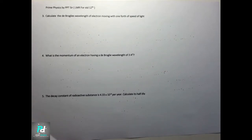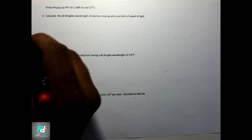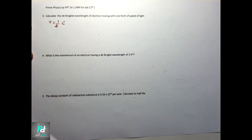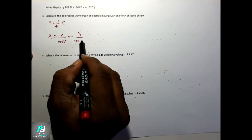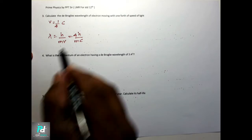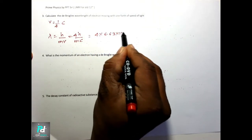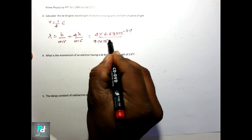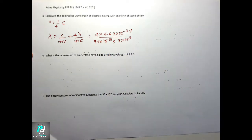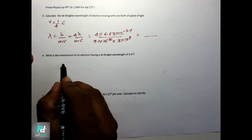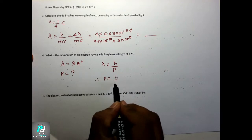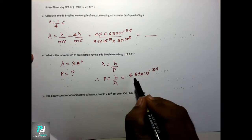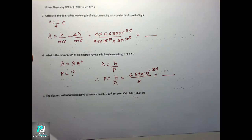Next: calculate the De Broglie wavelength of an electron moving with one-fourth the speed of light. Velocity of electron is c/4. General formula is lambda equal to h upon mv. Substitute v as c/4, so lambda equals 4 × 6.63×10⁻³⁴ upon 9.1×10⁻³¹ × 3×10⁸. This is quite simple to calculate. Also: what is the momentum of an electron having De Broglie wavelength 3 Angstrom? Formula: lambda equal to h upon p, therefore p equal to h upon lambda, which is 6.63×10⁻³⁴ upon 3. You will easily get it.